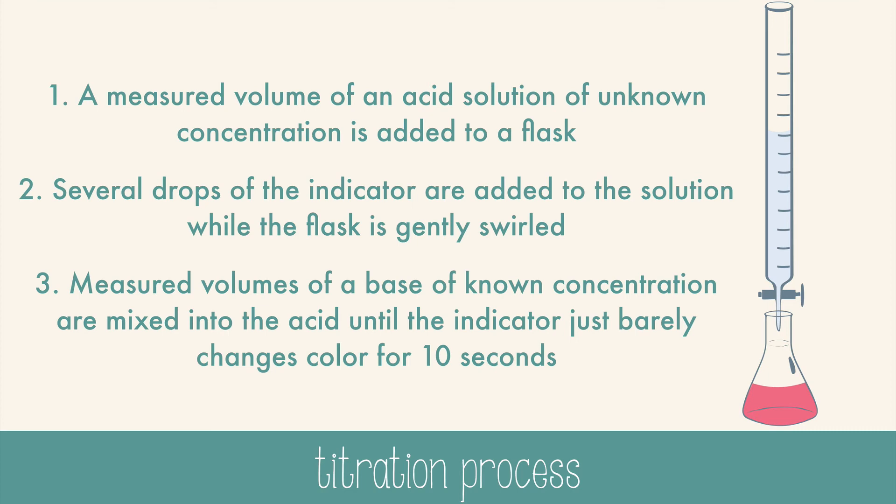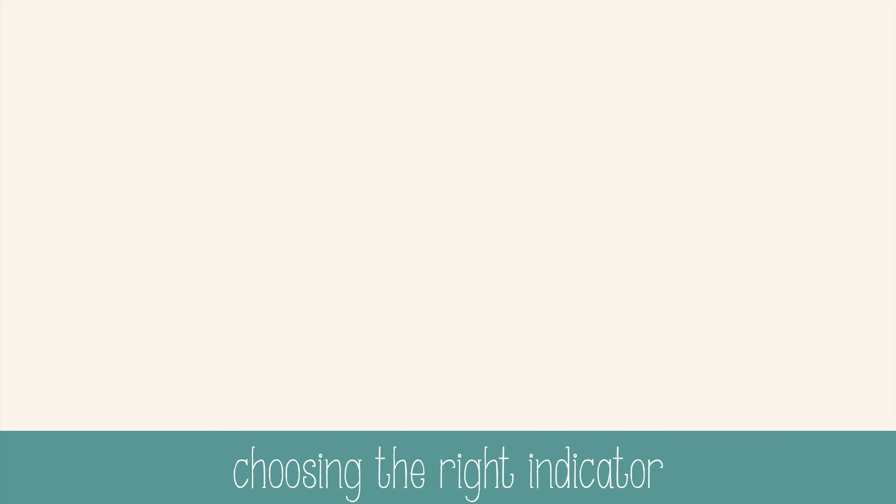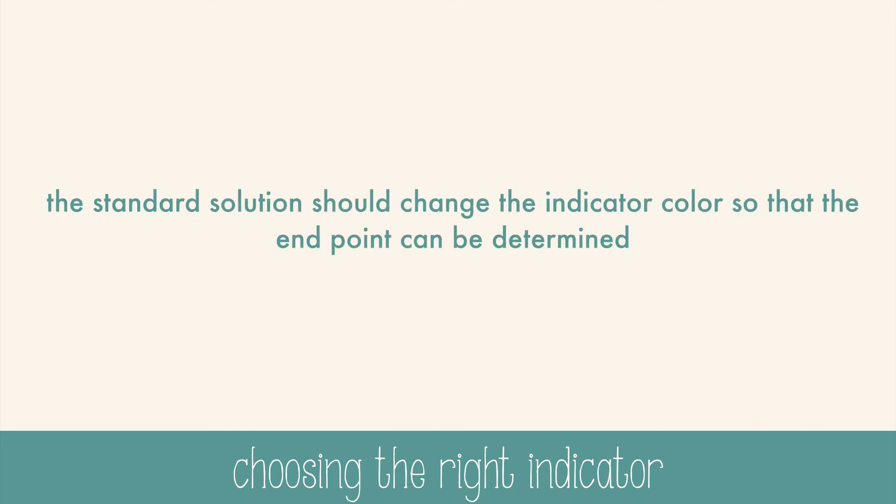At this time, you've reached the endpoint. The equivalence point, where hydrogen ions and hydroxide ions are equal, is not exactly the same as the endpoint. The endpoint is where the indicator changes color. The standard solution should change the indicator color so that the endpoint can be determined.